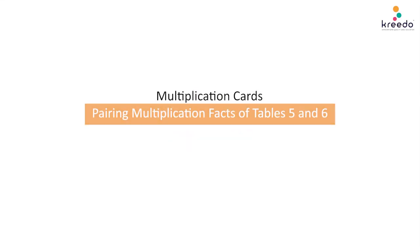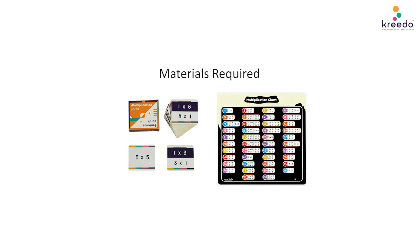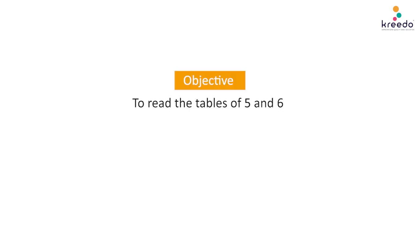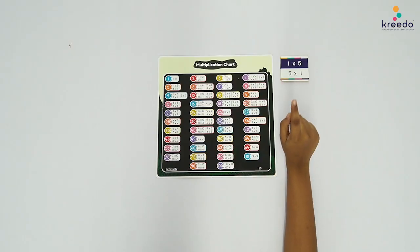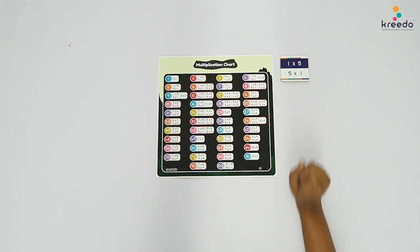Multiplication Cards Game. Name: Pairing Multiplication Facts of Tables 5 and 6. Materials Required: Multiplication Cards and Multiplication Fact Chart. Objective: To read the Tables of 5 and 6. Procedure: Place the Multiplication Cards and the Multiplication Fact Chart in the area of presentation.